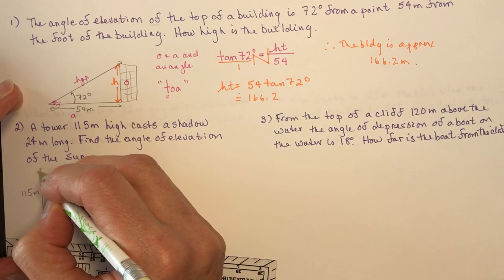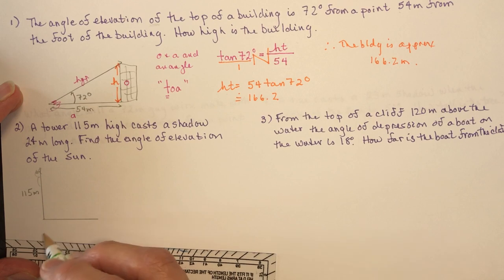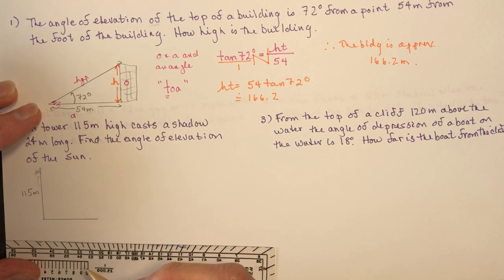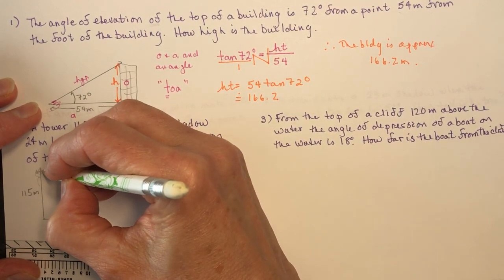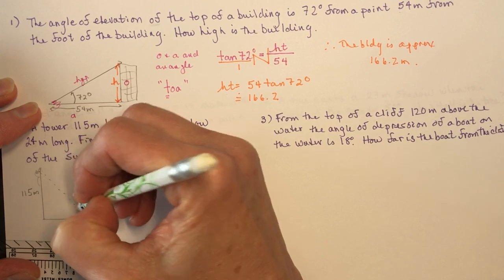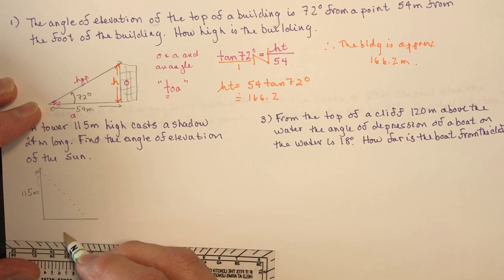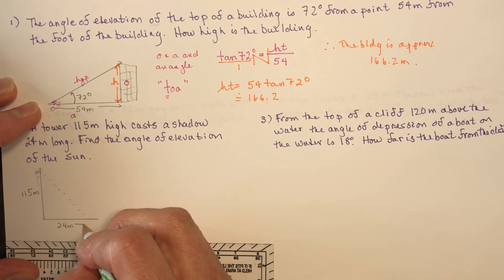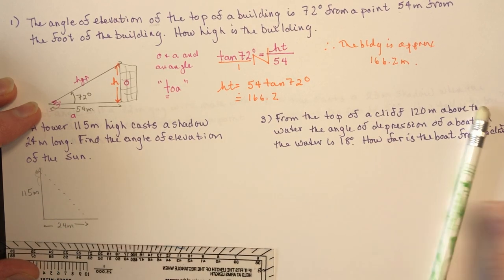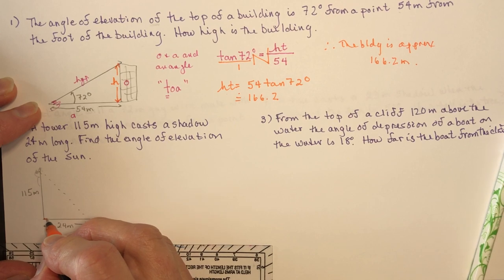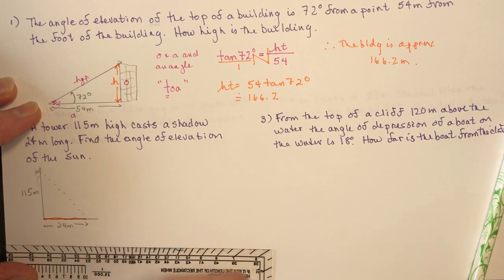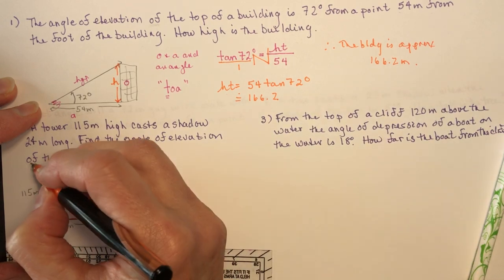Here's my tower — 115 meters. And it casts a shadow. Now, the shadow is not in the air; the shadow is always on the ground. So put your shadow here on the ground. It's 24 meters. Find the angle of elevation of the sun — my sun is over here, shining and creating this shadow on the ground. The angle of elevation of the sun is theta.